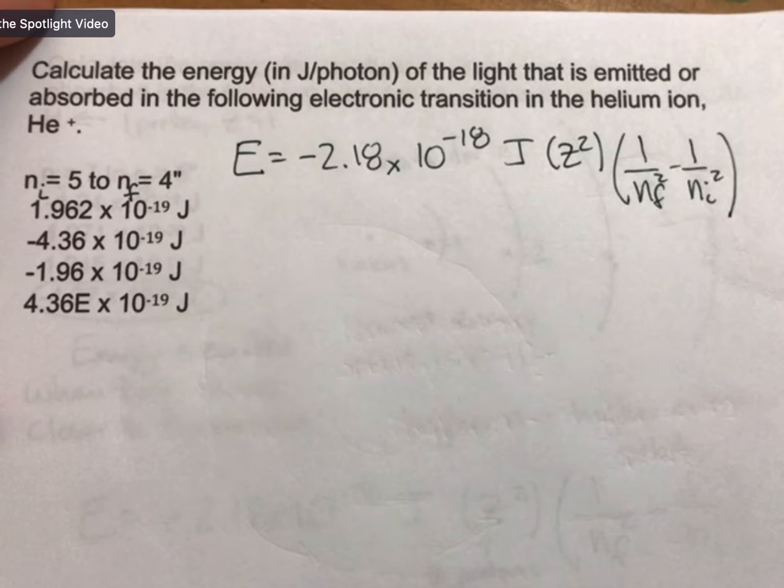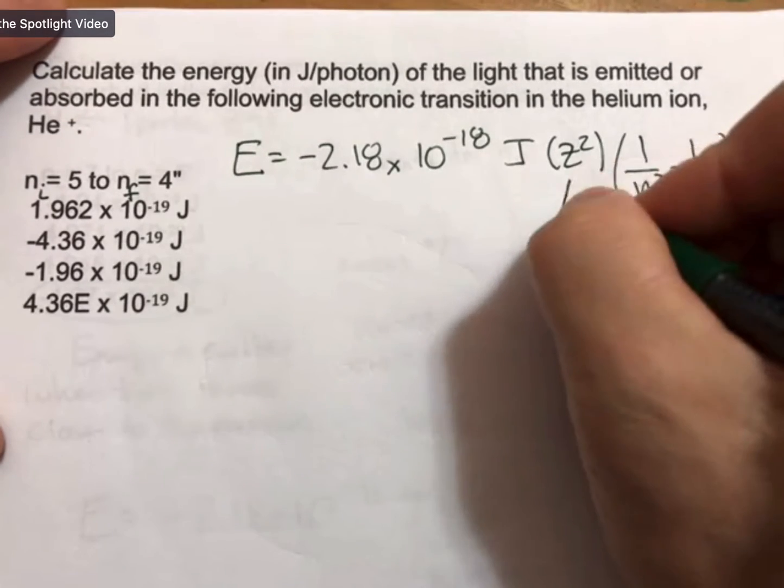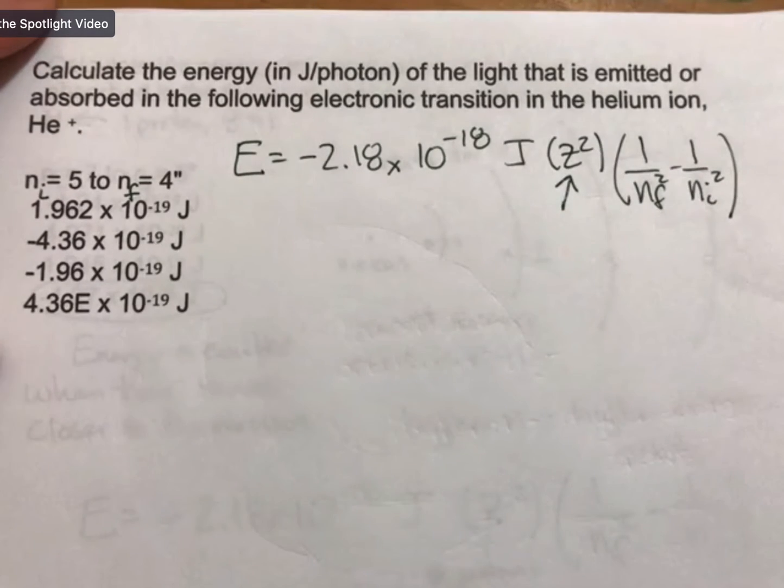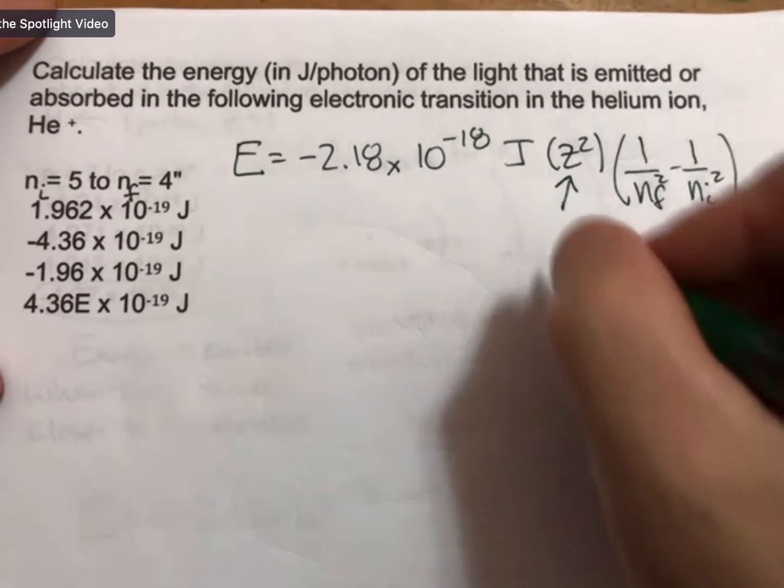And this time we have a couple things that are different. One is we're now talking about helium. And for helium, z equals 2.